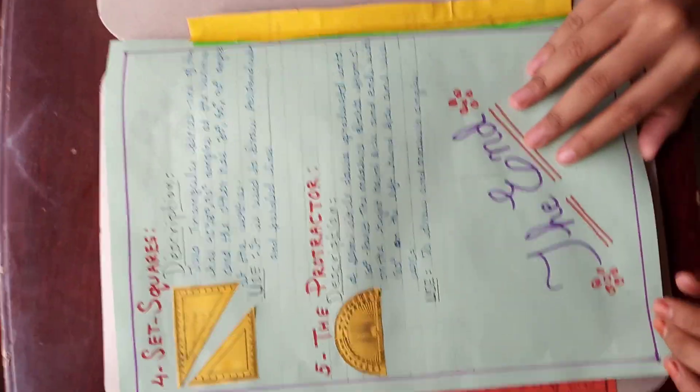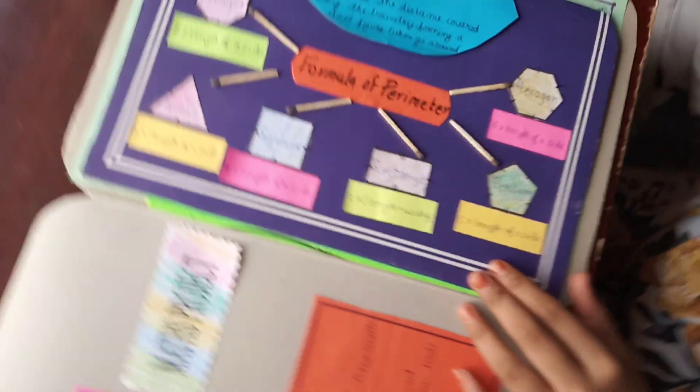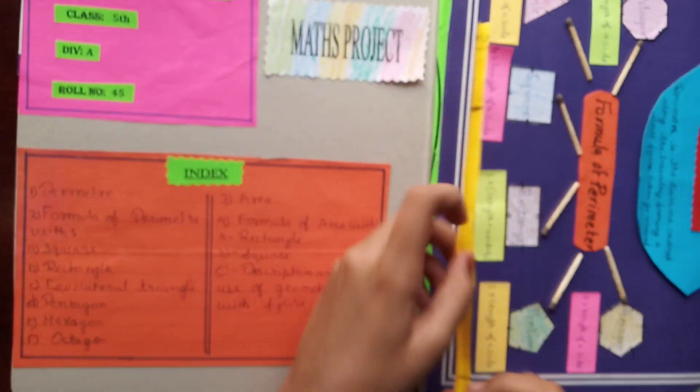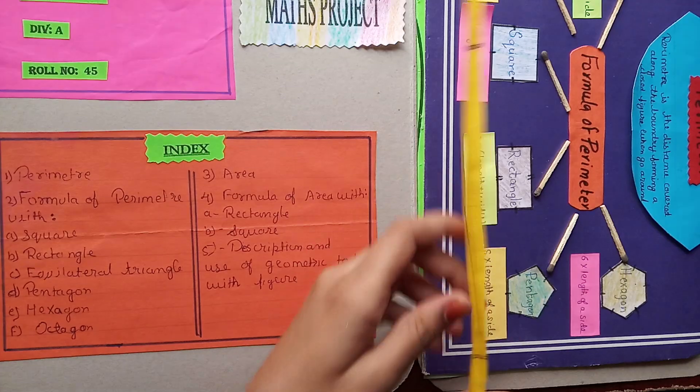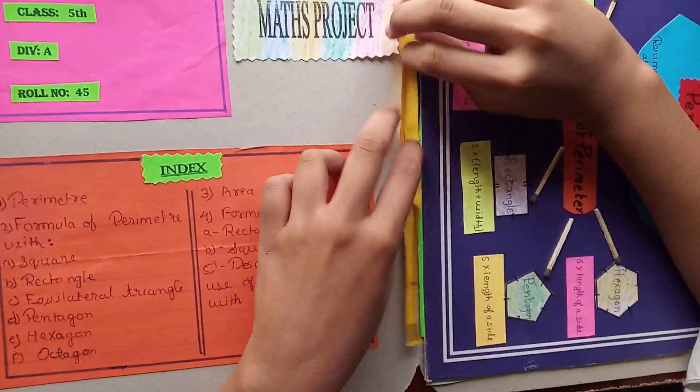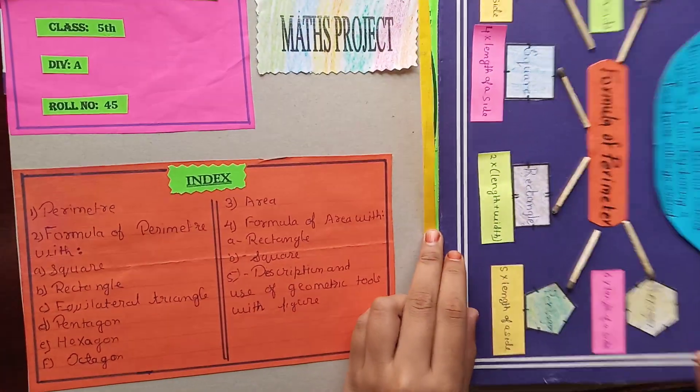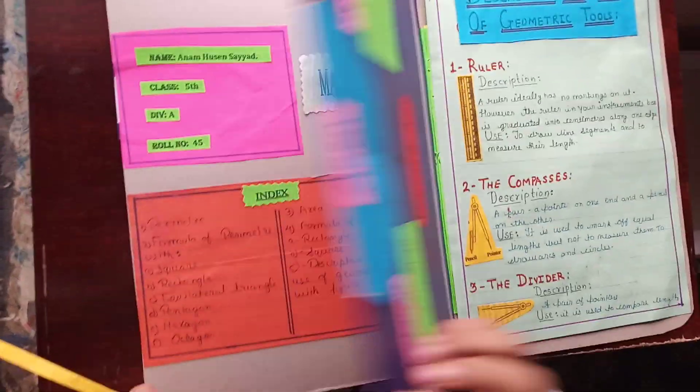And here is the end. And one thing I want to tell you, do you know how I made the pages of this? What I did is I took a thin strip like this and I stuck it here. And the pages you want to stick, you have to stick here like this so that it can be flipped easily like this. You can see.